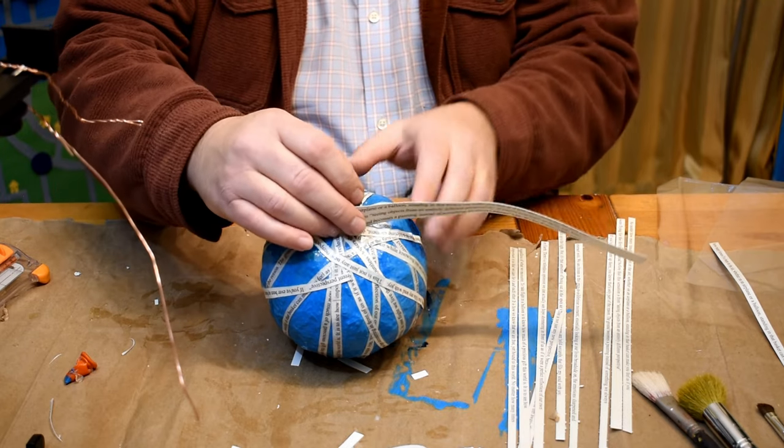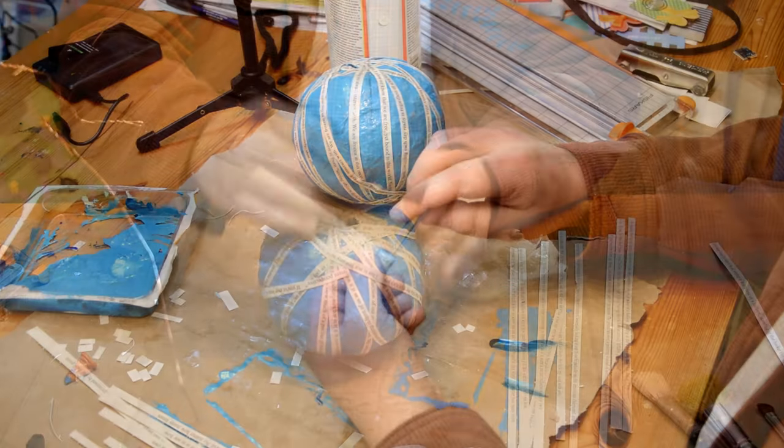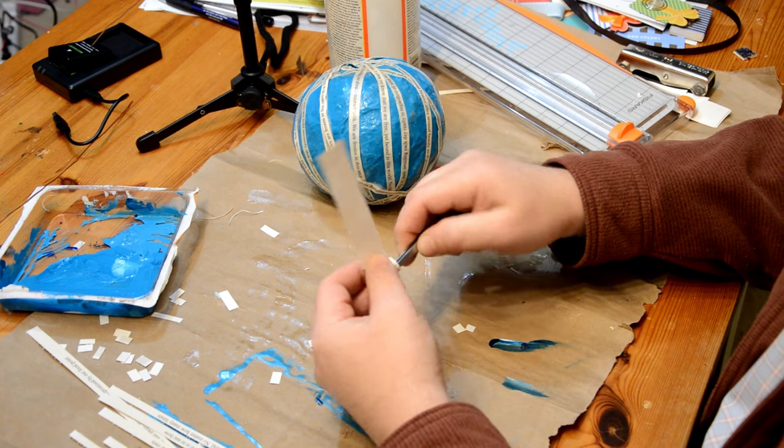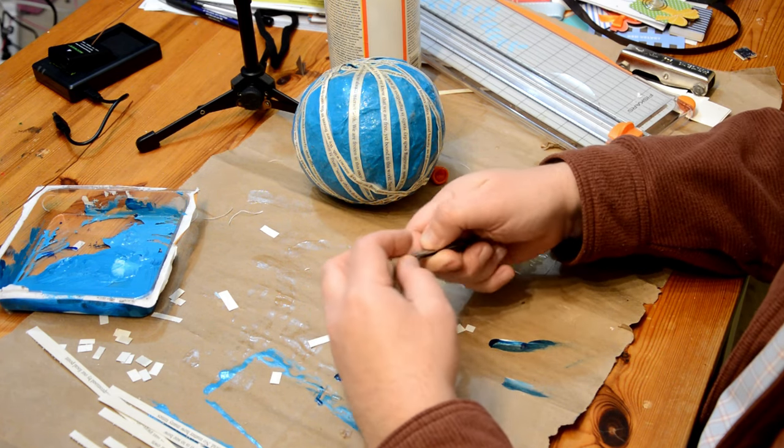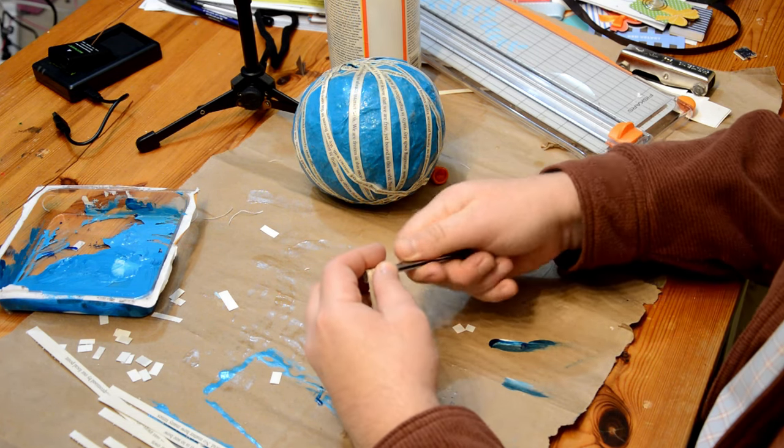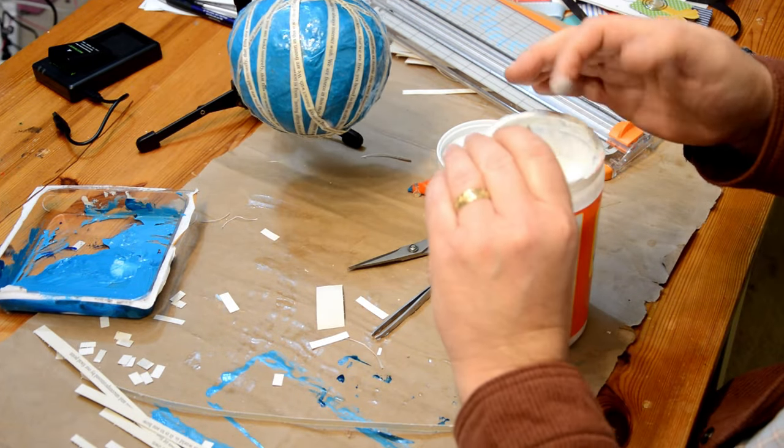And then I'm rolling it into a nice tight tube, measuring against the balloon itself. And then once that's rolled up nice and tight, and I still have a little hole down the center, which I'll use later, I'll add a little glue to hold it all together.